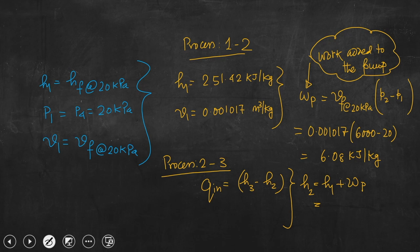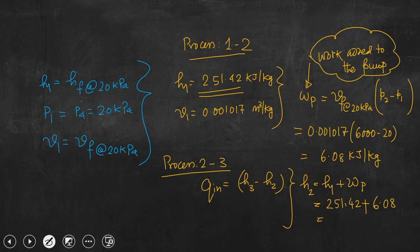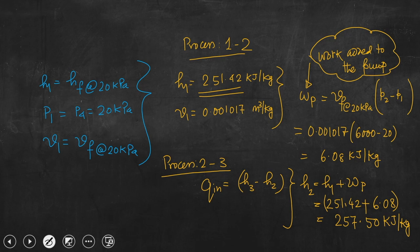H2 = H1 + W_pump = 251.42 + 6.08 = 257.50 kJ/kg. It is very important to always write units, otherwise you may come up with a wrong answer. We have now calculated H2 by applying the steady flow energy equation to the pump.